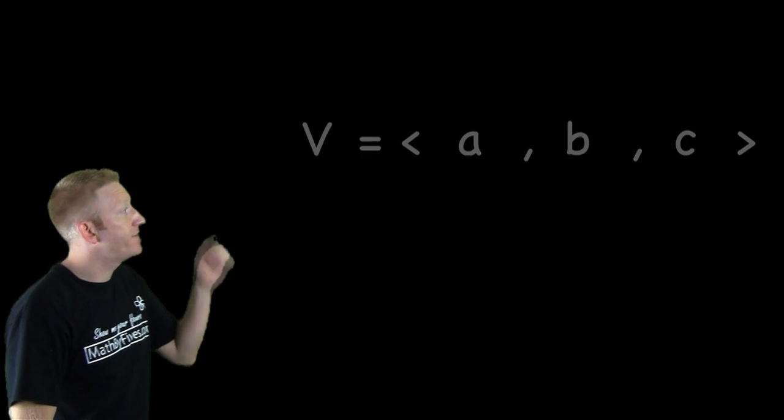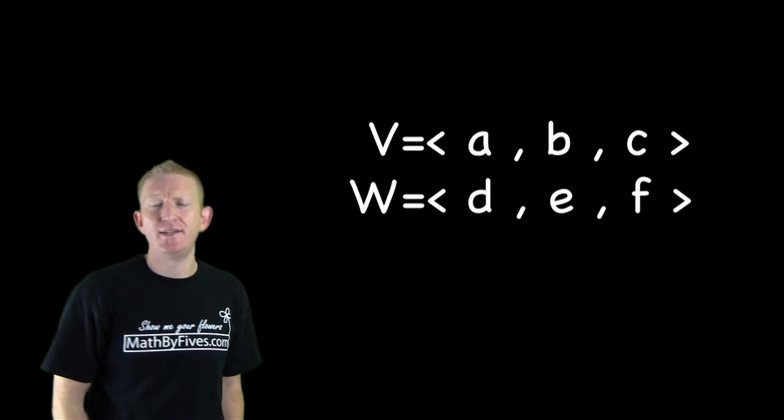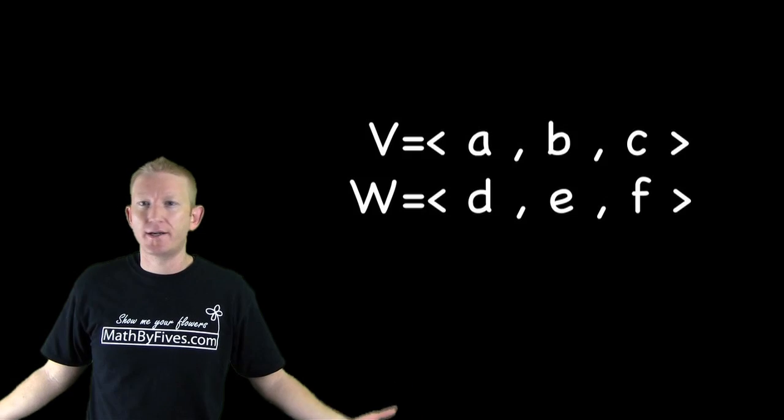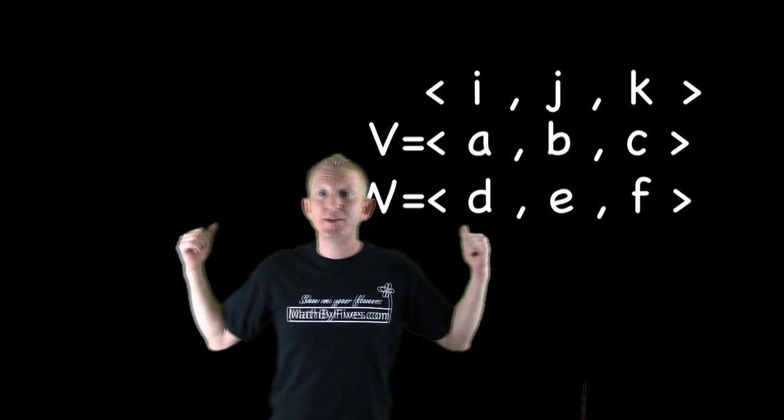We have two vectors in here. We have vector v and we have vector w. What do I want to do? I want to find the normal vector by taking the cross product with your usual basis vectors i, j, and k. So I put these behind you.